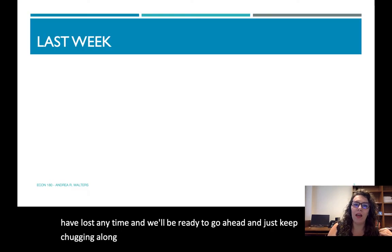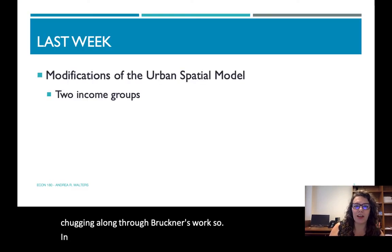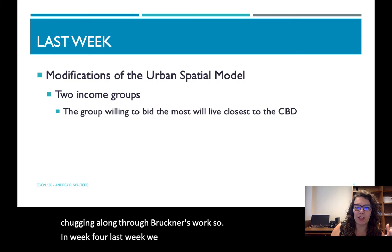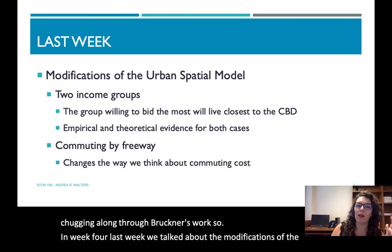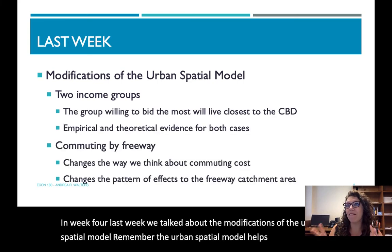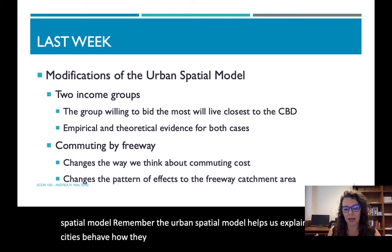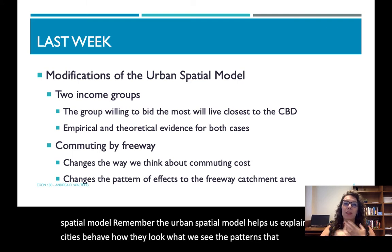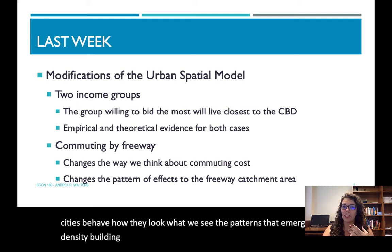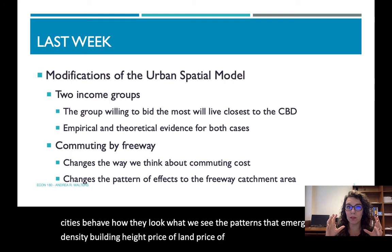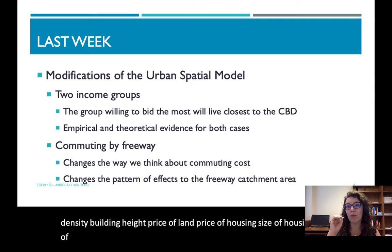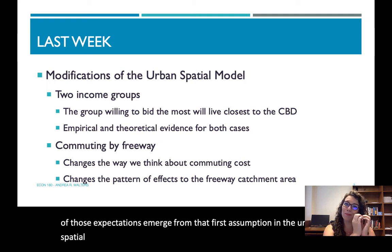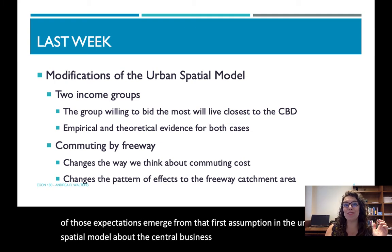In week four last week, we talked about the modifications of the urban spatial model. The urban spatial model helps us explain how cities behave — how they look, what patterns emerge: density, building height, price of land, price of housing, size of housing. All of those expectations emerge from the first assumption about the central business district and the commute time.